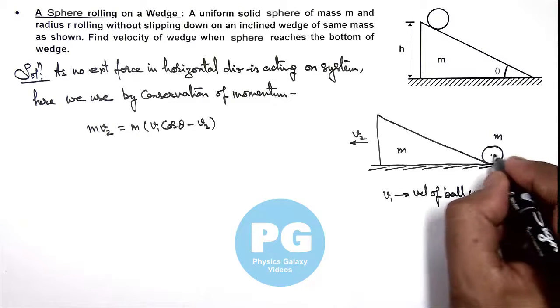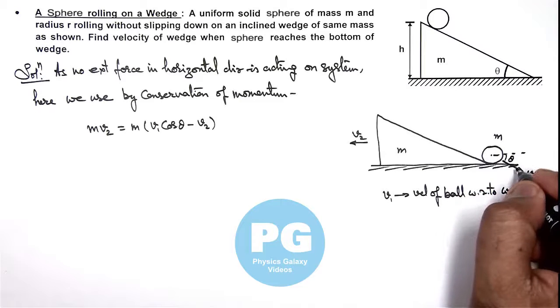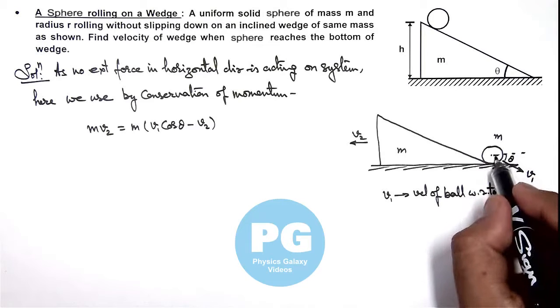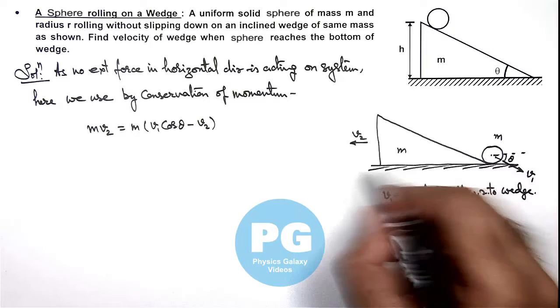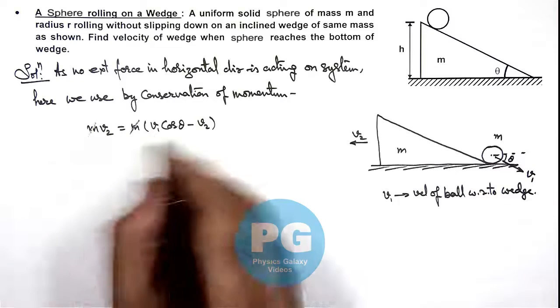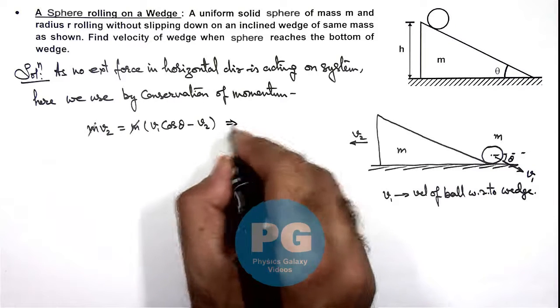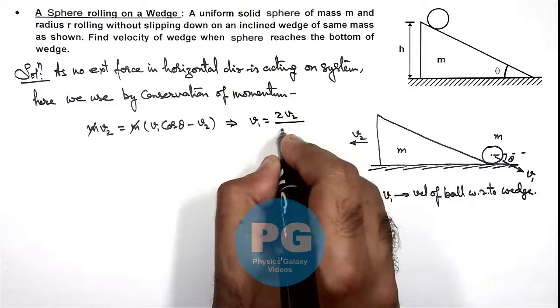So in this situation, with respect to horizontal v1 is moving at an angle theta. So ball is moving toward right at v1 cos theta as well as it is moving with the wedge toward left with v2. So simplifying this relation here m gets cancelled out and this will give us v1 is equal to 2v2 by cos theta.